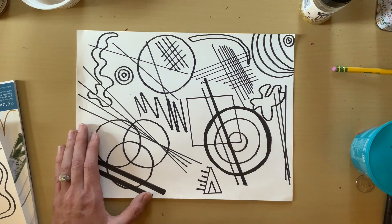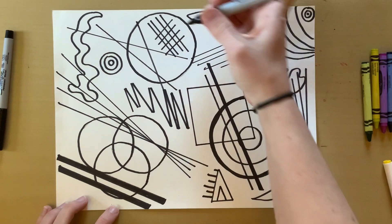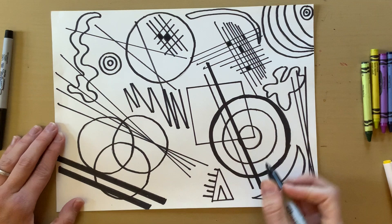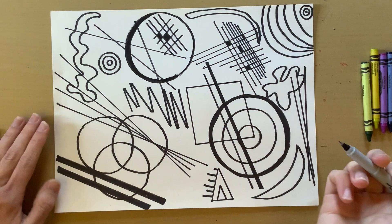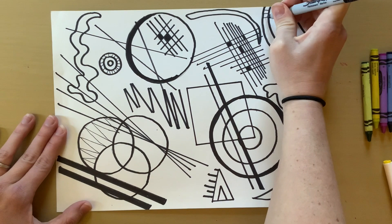After you're done your drawing make sure you go over all of your lines with Sharpie and then you can start using the Sharpie to fill in some shapes and make some lines thicker to give it more variation. It looks nice when you have some circles that are thicker lines and some that are thin. You can also add designs to your shapes just to make it a little bit more detailed.